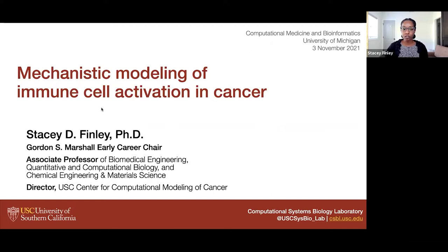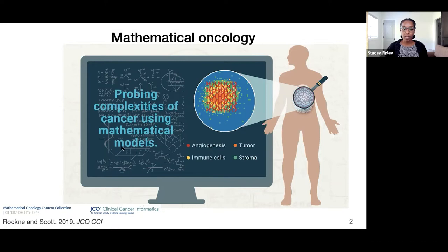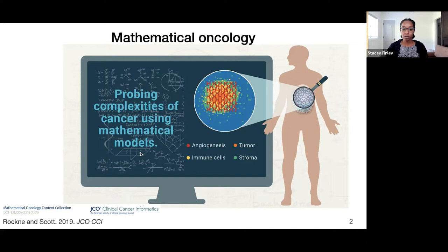I've been focusing over the last four or five years on developing mechanistic models of immune cell activation in the context of cancer. This is situated in a larger field called mathematical oncology, where we use mathematical models and computational tools to probe the complexities of cancer. Cancer involves a number of different cell types — the disease cells, immune cells, and other stromal elements — as well as different processes like angiogenesis, the formation of new blood vessels, happening over different length scales and time scales. Having a quantitative understanding of the tumor microenvironment can be quite useful in understanding the response to treatment and gaining a deeper view of tumor growth.